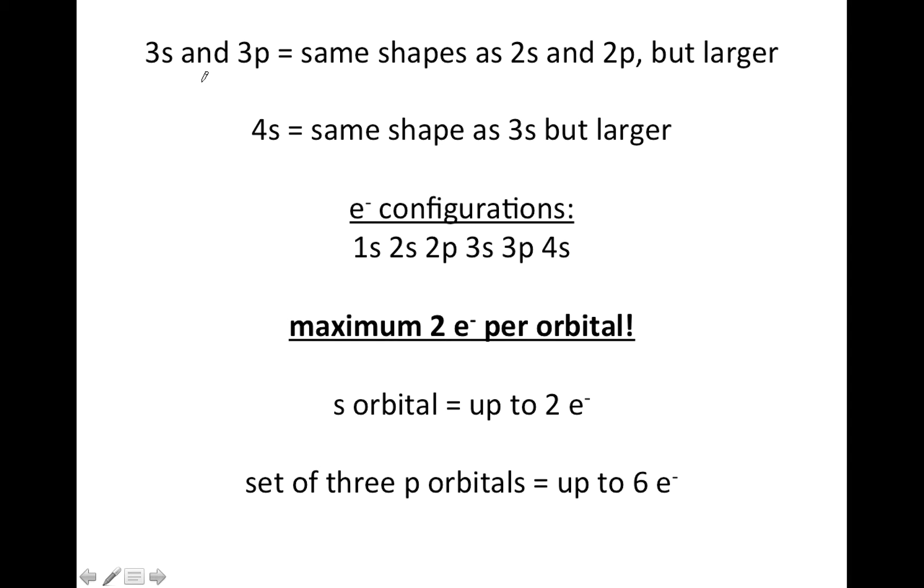So electron configurations are your way of telling someone where the electrons generally are located around the nucleus. We use the word probability because they can move much further out some of the time, but most of the time they'll be found in these particular orbitals.